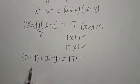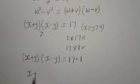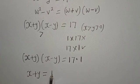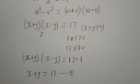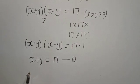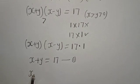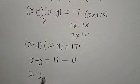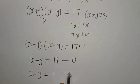So from the factoring: X plus Y equals 17 — call this equation 1. And X minus Y equals 1 — call this equation 2. This gives us a system of simultaneous equations.